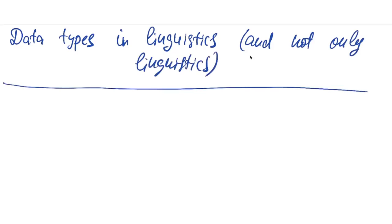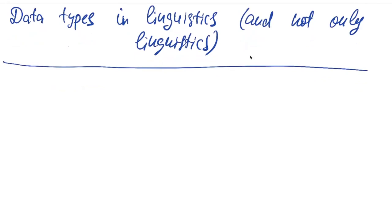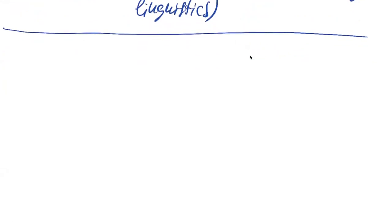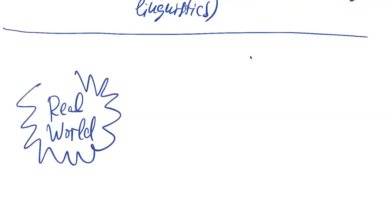I'll begin with a rather universal story. What is actually called data analysis is probably the following idea: we have some natural phenomenon, some real world that we want to study. In linguistics, it can be some people who speak different languages and phenomena in their languages that actually exist in the real world, and we want to study these real world phenomena.